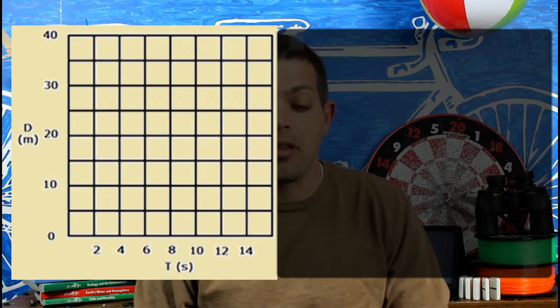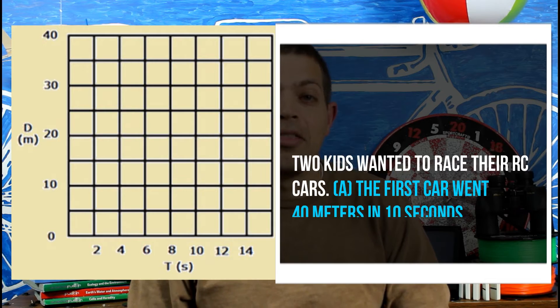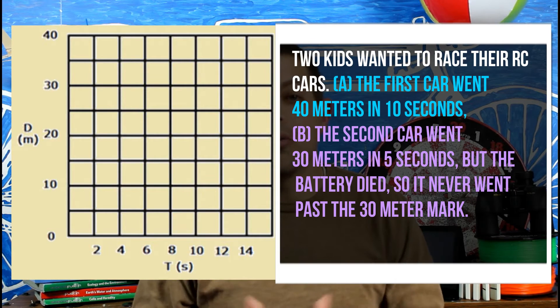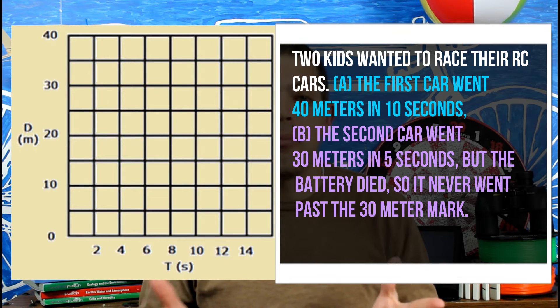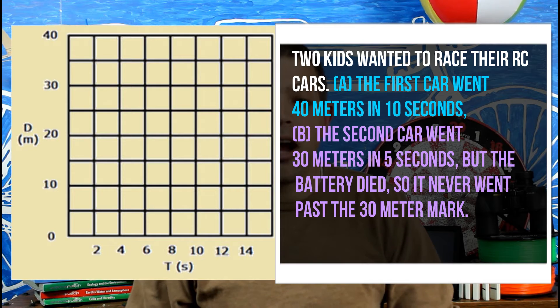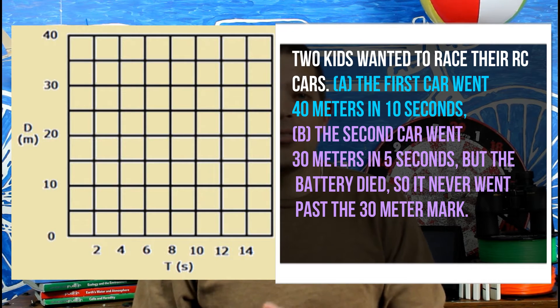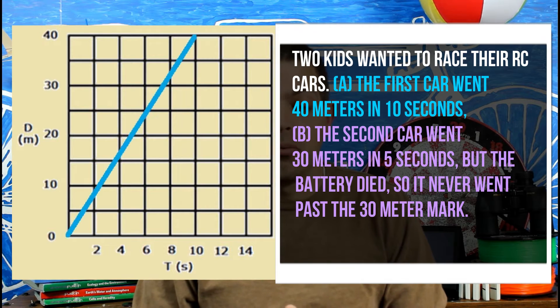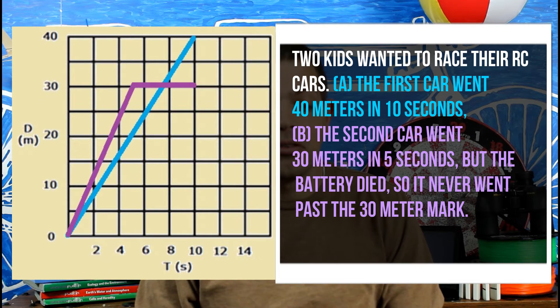Here we have a chance to take a look at two kids that have their RC cars. The biggest thing about this is please only use the data that's available. I know a lot of times in math class, you're used to this MX plus B or inequality that we're mapping or graphing. In this case, use the data that's there. So our first RC car is pretty easy. We start at zero for both of these. The first car goes 40 meters in 10 seconds. The second car goes 30 meters in five seconds.